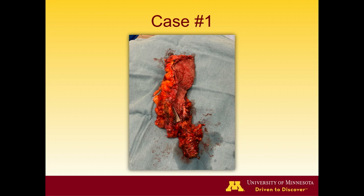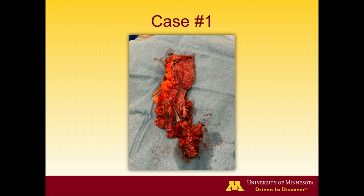Unlike the typical diverticular colovesical fistula where stitches go into very scarred tissue, this bladder repair was soft and manageable. The fistula ran from the colon to the urachus — final pathology showed only diverticulitis, no malignancy. The umbilicus was left open, drained for about a week, and dried up on its own.